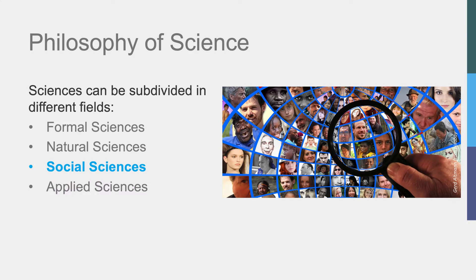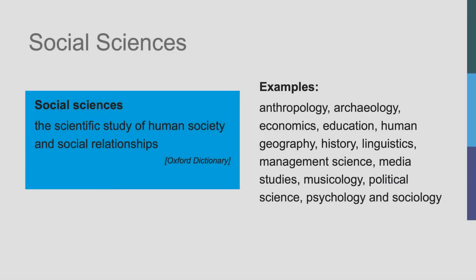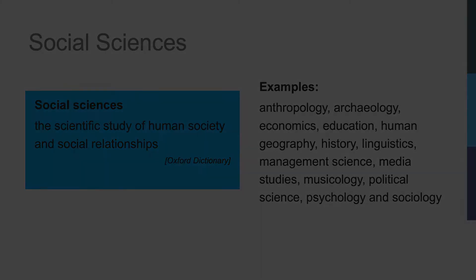The third branch is the social sciences, such as sociology. This branch studies human society and social relationships, and encompasses many fields, from anthropology to linguistics, and from political science to musicology.